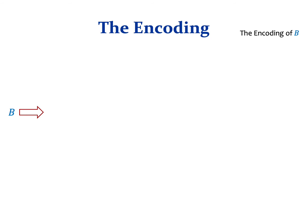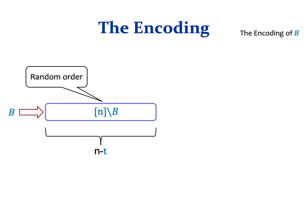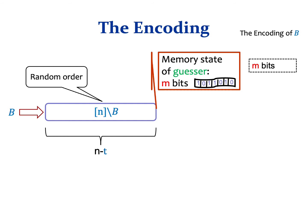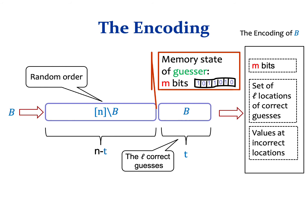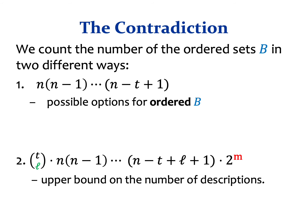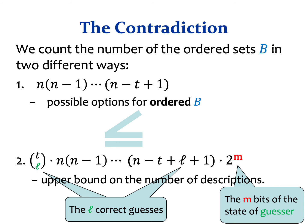To encode a random ordered set b, we consider a guesser with fixed randomness and consider the guesser's memory state t steps from the end of the game. We encode b by storing the guesser's m bits of memory, the locations at which the guesser guessed correctly (taking log t choose l bits), and the cards not guessed correctly in their respective order. We simulate a game where the first n-t cards are not from b, take a snapshot of memory, then continue with cards ordered according to b. We get a contradiction by counting ordered sets in two ways, yielding an inequality that bounds the guesser's memory versus number of correct guesses.